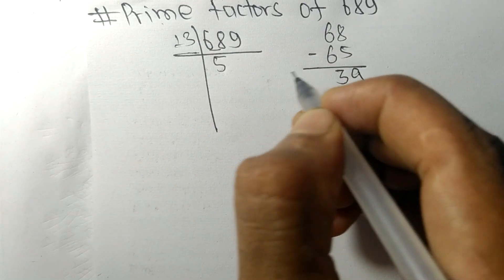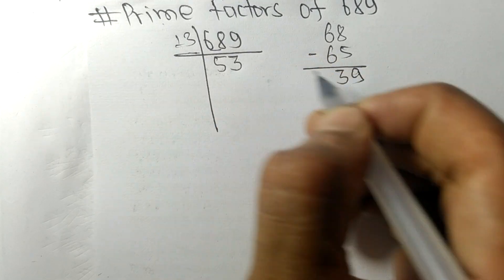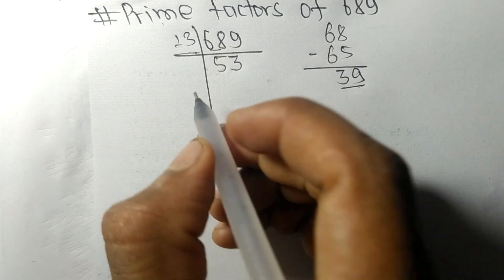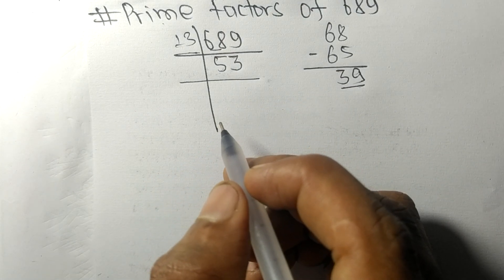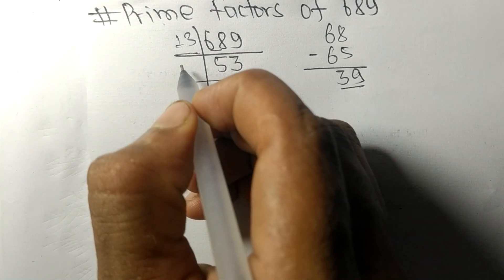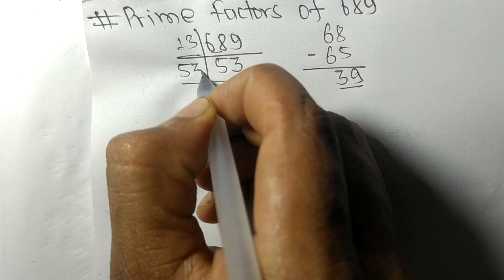39. 13 times 3 means 39, so now we got 53 which is a prime number, so it is divisible by 53 itself.